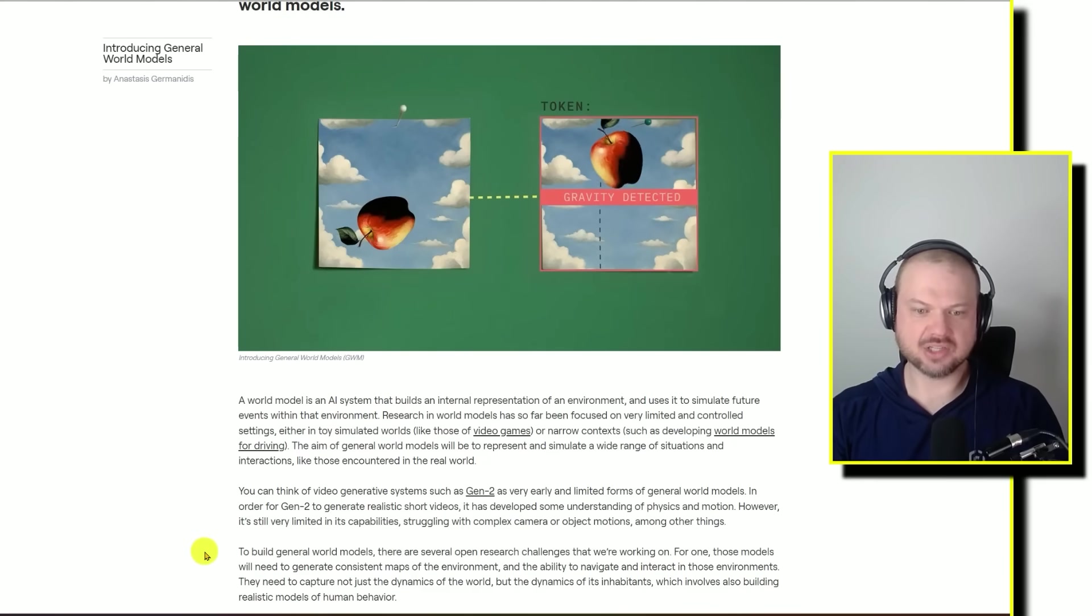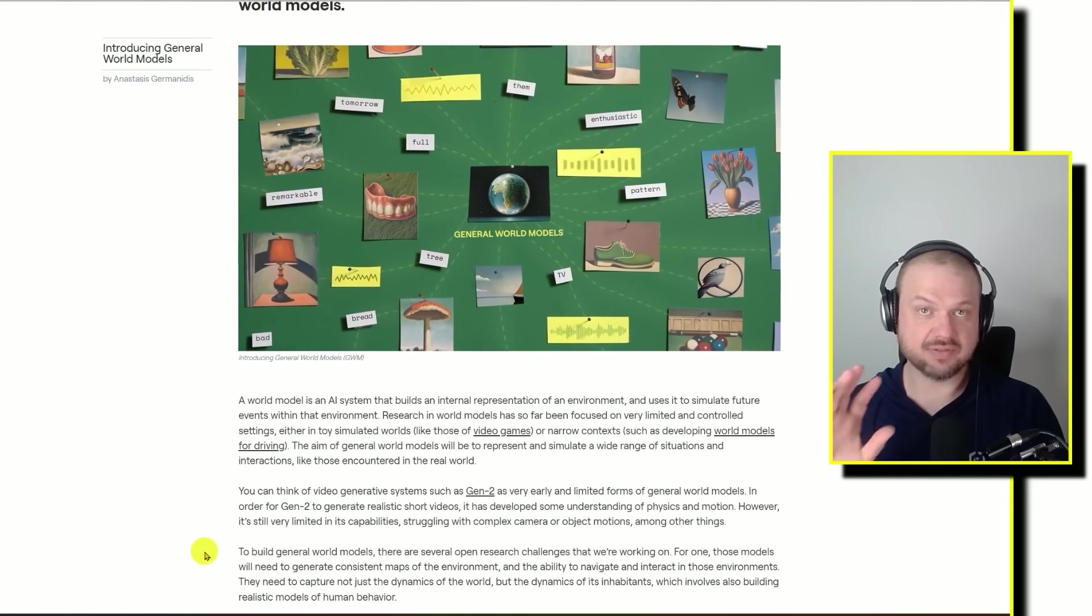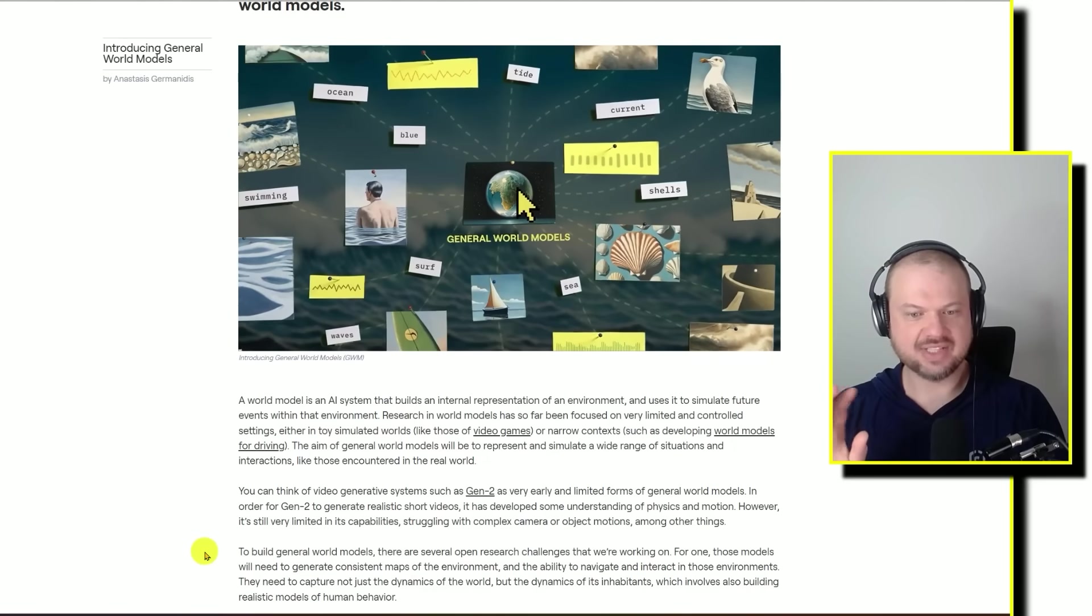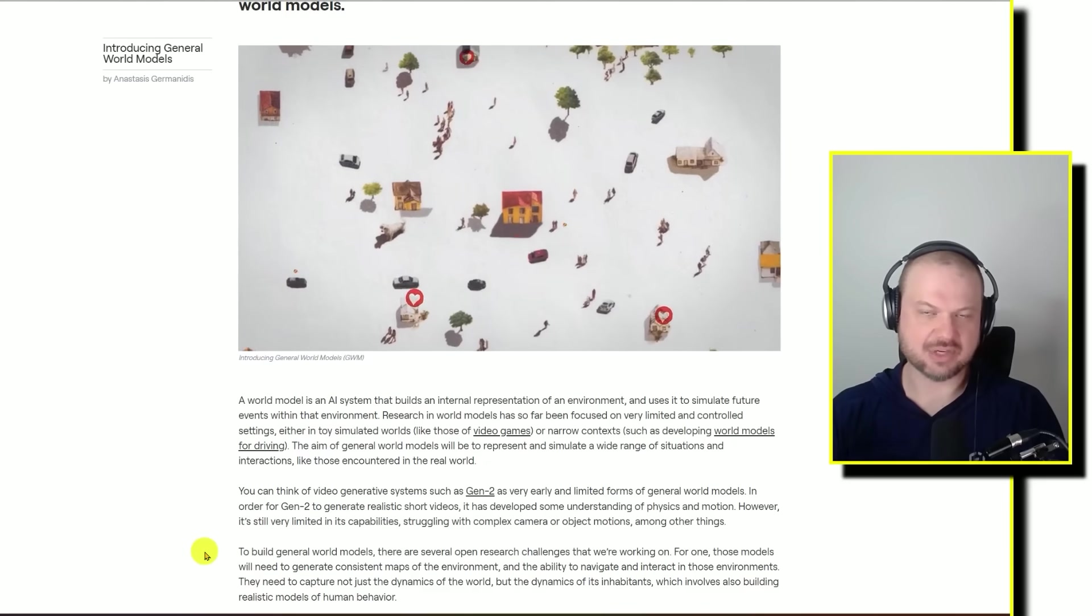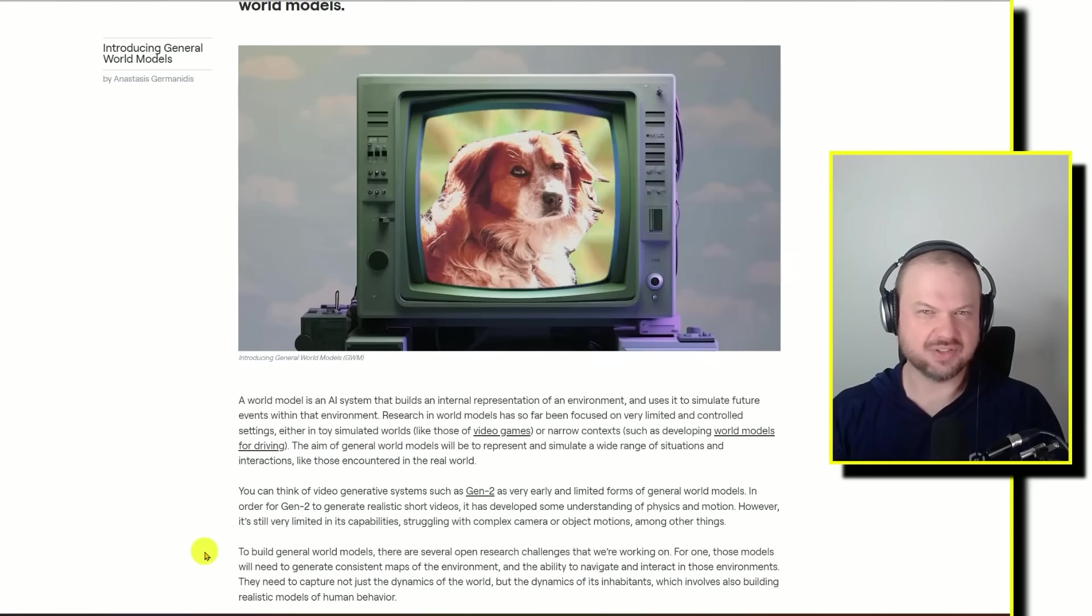And so the fact that RunwayML is doing that is very interesting. So they're saying to build general world models, there are several open research challenges that we're working on. For one, these models will need to generate consistent maps of the environment and the ability to navigate and interact in those environments. They need to capture not just the dynamics of the world, but the dynamics of its inhabitants, which involves also building realistic models of human behavior.